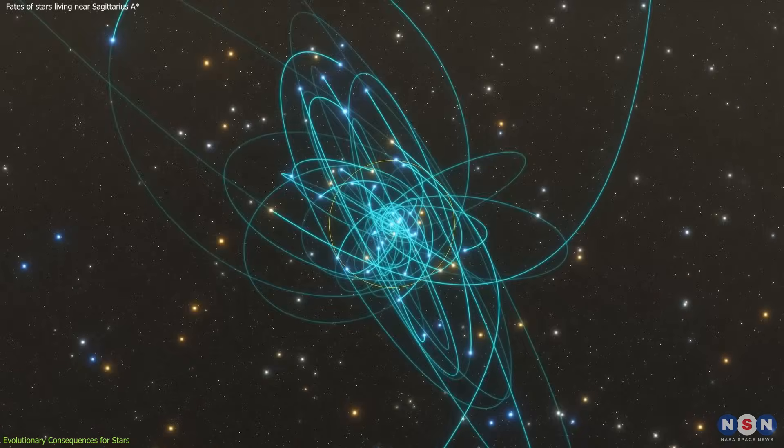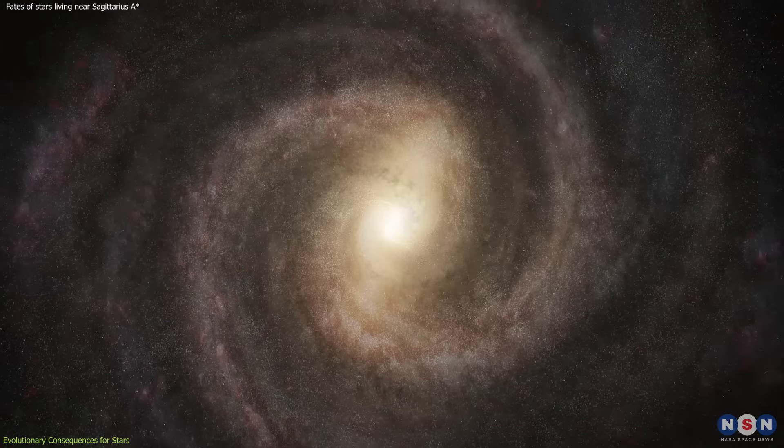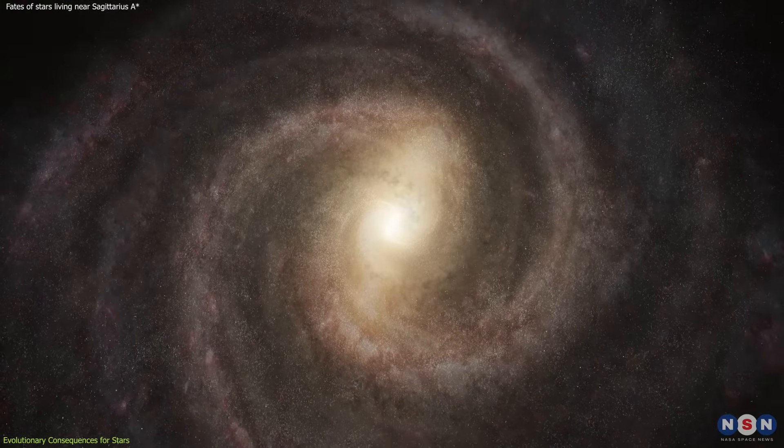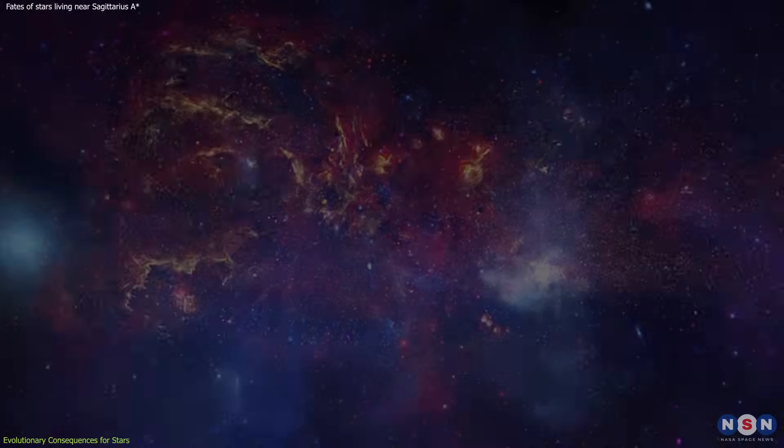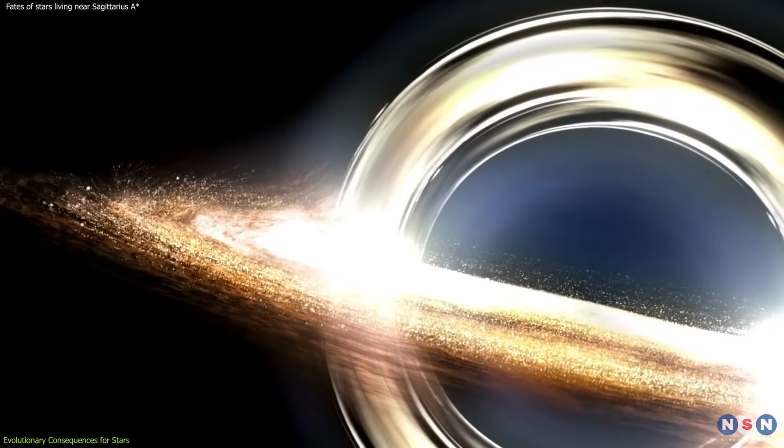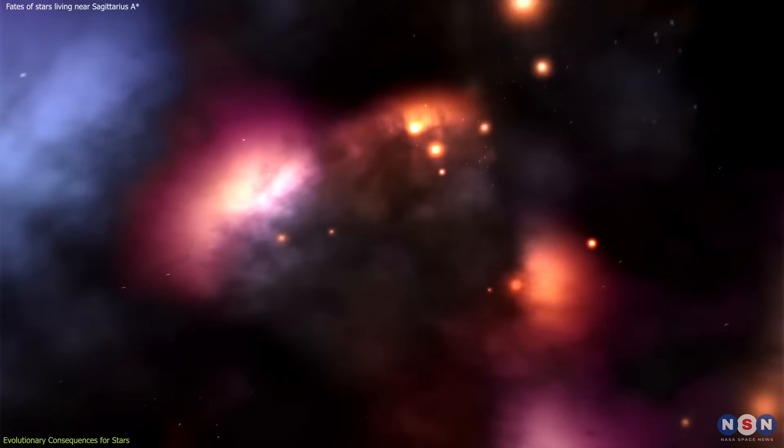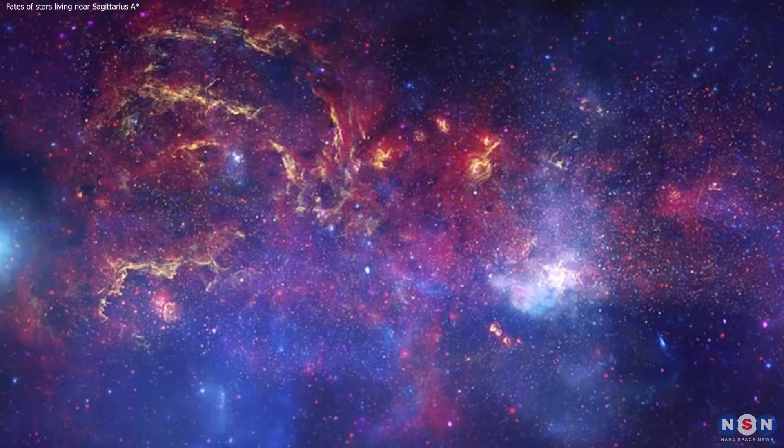Moreover, the unpredictability introduced by punctuated chaos has implications for the overall structure and evolution of the Milky Way's central region. The chaotic interactions among stars could lead to a more dynamic and rapidly changing galactic core, with implications for the formation and growth of the black hole, the distribution of stars and gas, and the overall gravitational landscape of the galaxy's center.